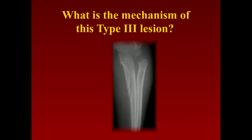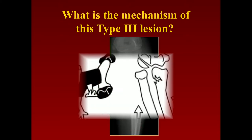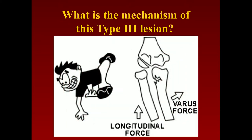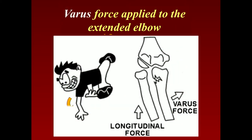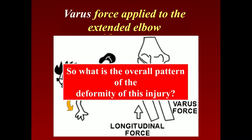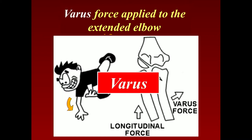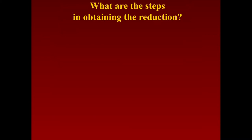The mechanism of injury is that they fall with a longitudinal force and you have a varus force applied to the extended elbow. This usually occurs in kids that don't have much of a carrying angle. The overall deformity of this injury is one of varus.